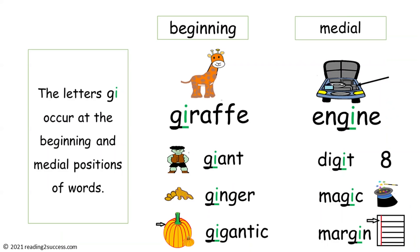Now we're going to have kids work with the G-I soft G sound. Remind them that when I follows a G, it usually makes a soft G word. Let's look at G-I in the beginning position: giraffe, giant, ginger, and gigantic. Then we're going to look at G-I words in the medial part of a word: engine, digit, magic, and margin. We do not have a final position because words ending in G-I do not make the soft G sound there.